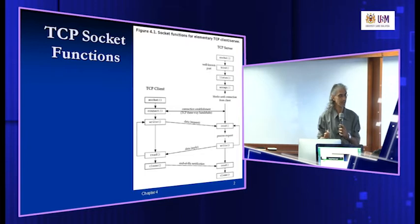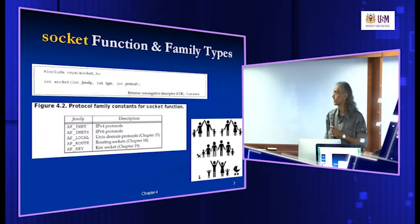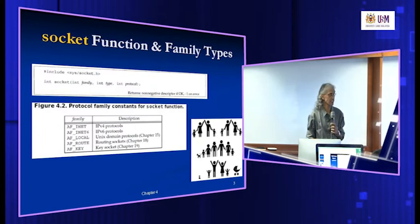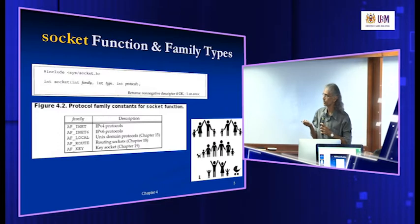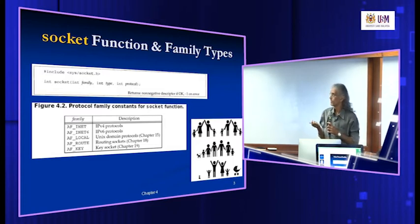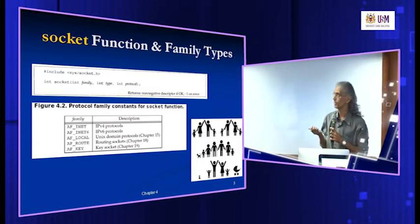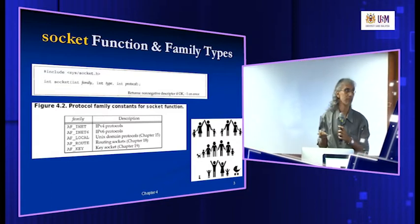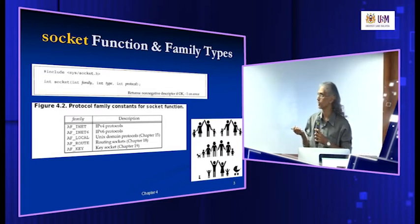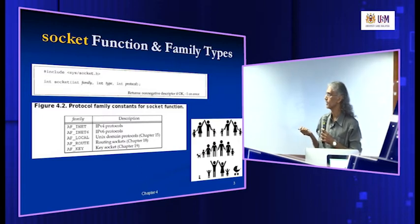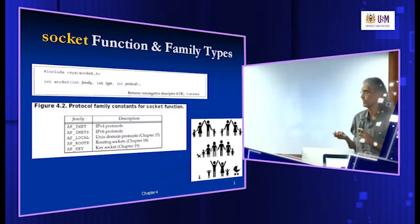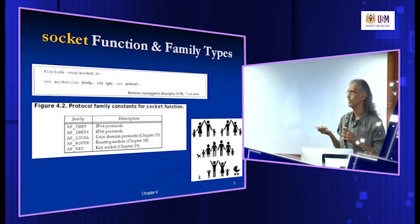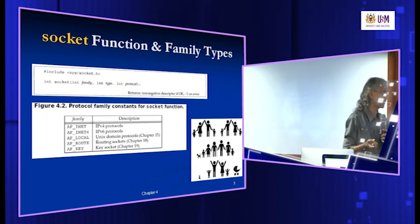Let's start with the first one — the socket function — which is basically used to create a socket. We have seen this before. There are three parameters to the socket function: the family, the type, and the protocol. It returns one integer value. If everything goes okay, it returns a non-negative positive number which becomes your socket ID. If it returns negative one, that means the socket could not be created — there was an error.